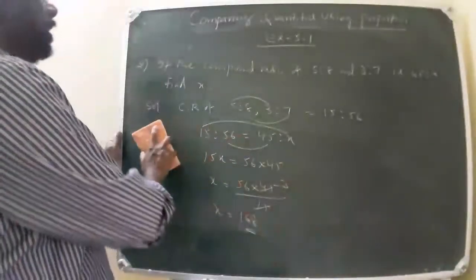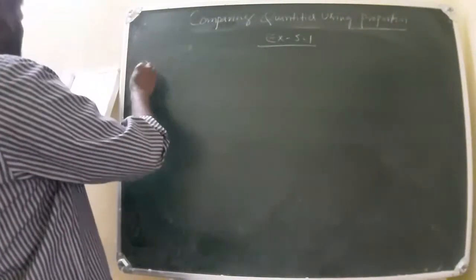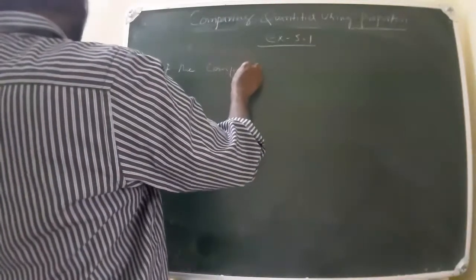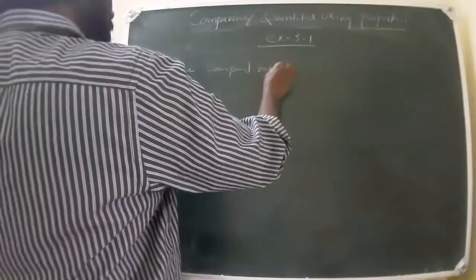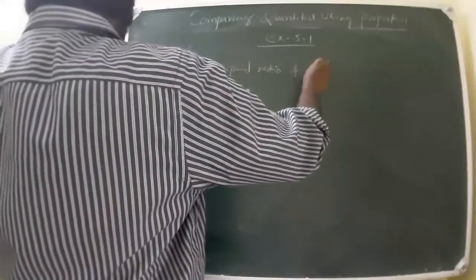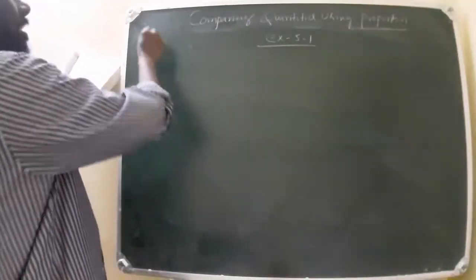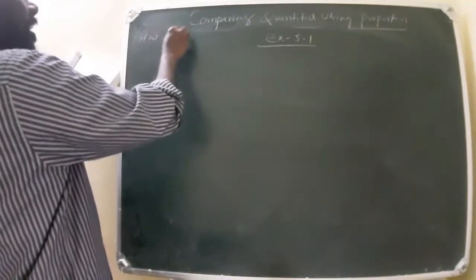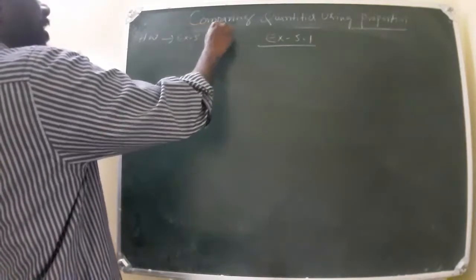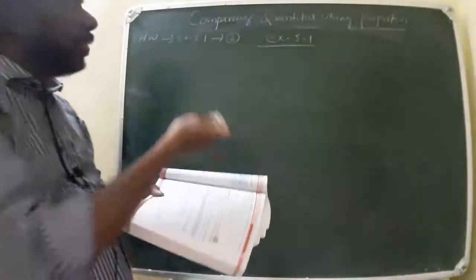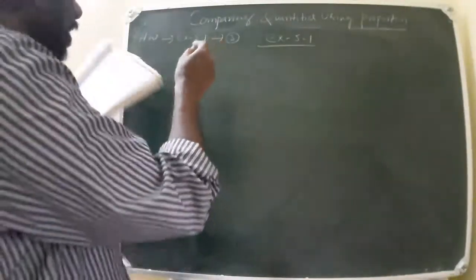Third sum in Exercise 5.1 is the same model as the second sum. You should do that one yourself — it is very easy. The same compound ratio method applies.